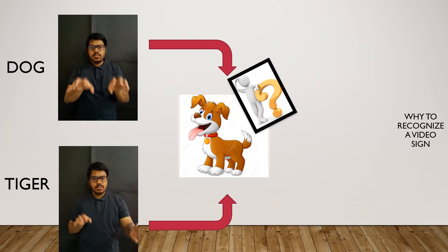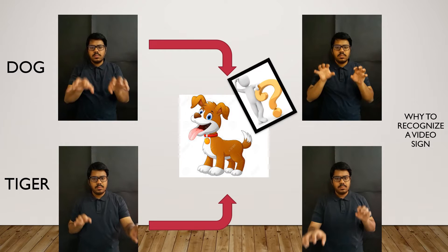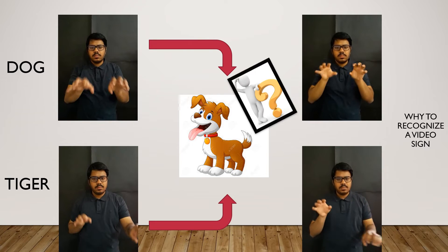There are many difficulties in recognizing signs from static images. Video signs contain temporal data, and it is necessary to track correct movements of hands and head. The pattern in which movements are done also affects the result. For example, signs for dog and tiger are similar, making recognition difficult from static images alone — hence we need to take into consideration the video signs.